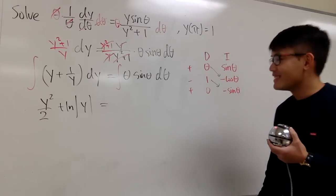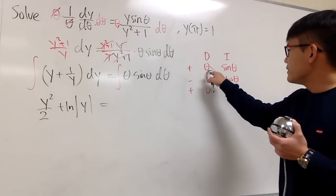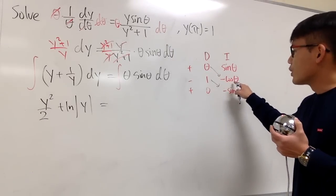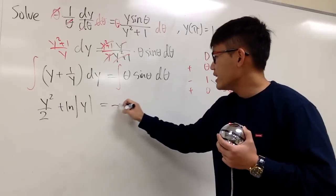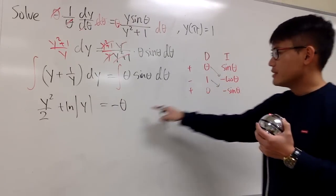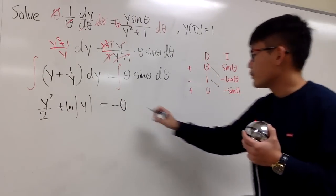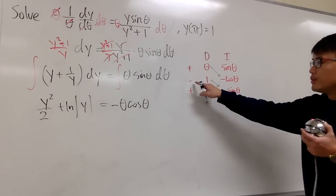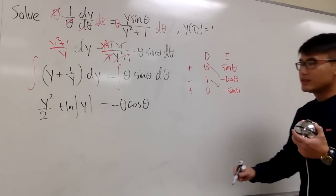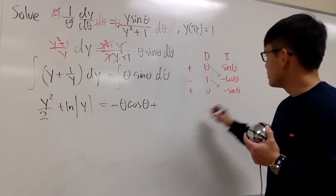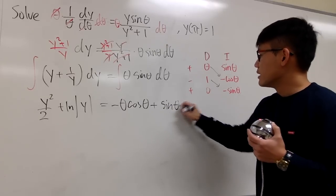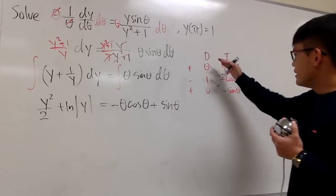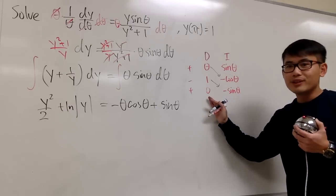And now, the product of the diagonals are the answer. That's really nice. So first, we will have positive theta times negative cosine theta. So that's negative theta, because of this negative right here. And we have the cosine theta. And we do negative 1 times this, so it becomes positive 1 times that, which is just sine theta. And this is it, because we have a 0 in the D column.